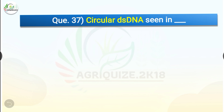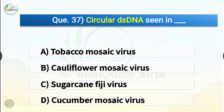Question number thirty-seven: Circular double-stranded DNA is seen in dash. The options are Tobacco mosaic virus, Cauliflower mosaic virus, Sugarcane fiji virus, or Cucumber mosaic virus. The correct answer is option B, Cauliflower mosaic virus. Cauliflower mosaic virus belongs to the Caulimoviridae family of circular double-stranded DNA viruses. It predominantly infects members of the Brassicaceae family including radish, turnip, canola, mustard, cauliflower, broccoli, and cabbage.